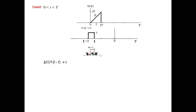Case 2: t is between 0 and capital T. We have pulled it slightly. We look at both t and t minus capital T — there is some overlap. The multiplication of the two overlapping functions gives tau multiplied by 1, which equals tau.